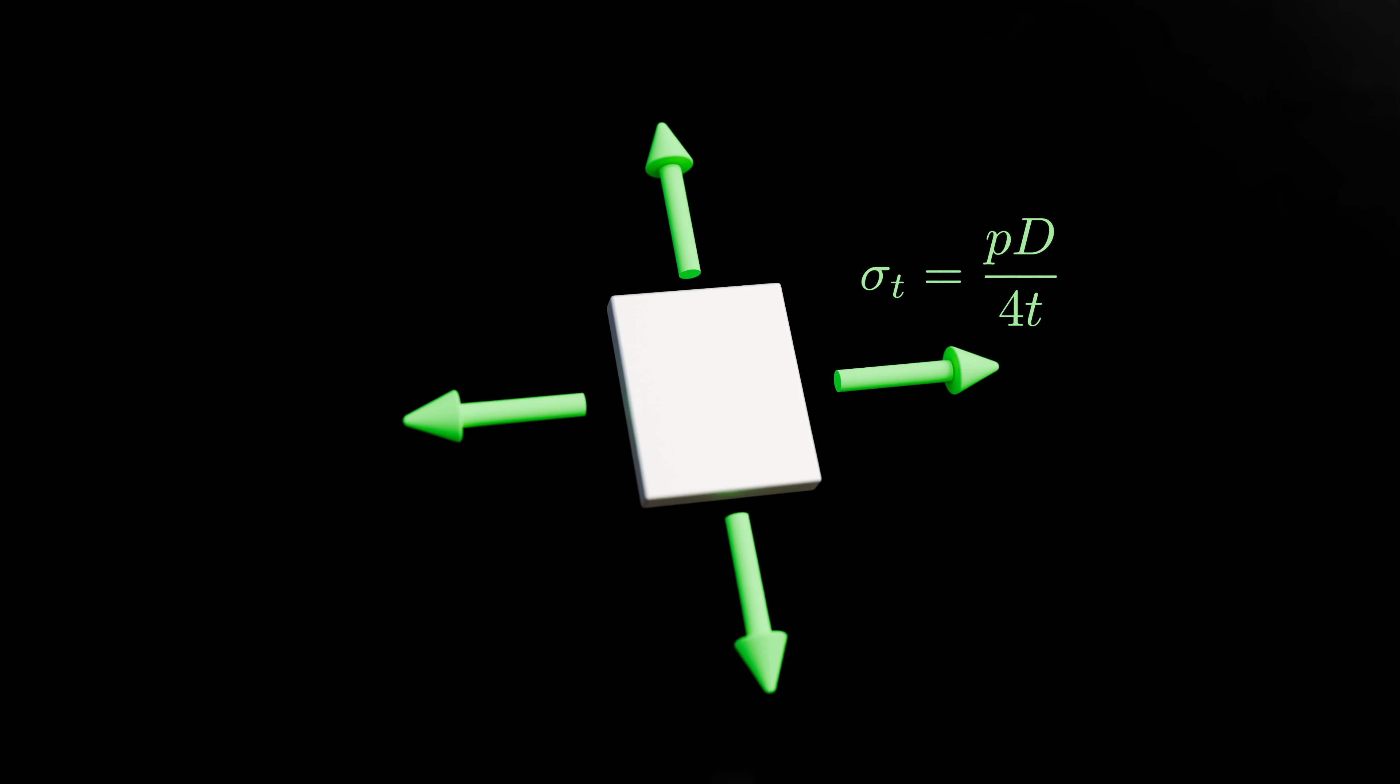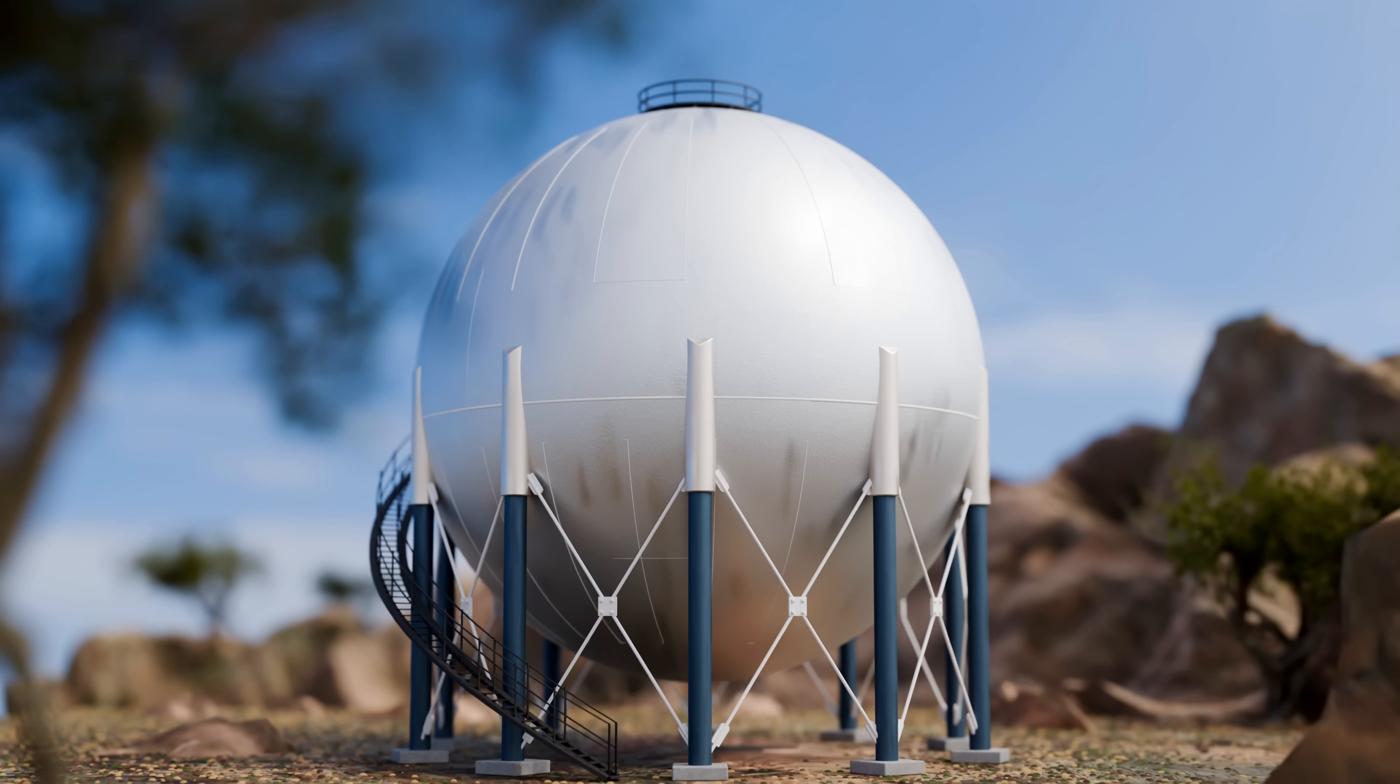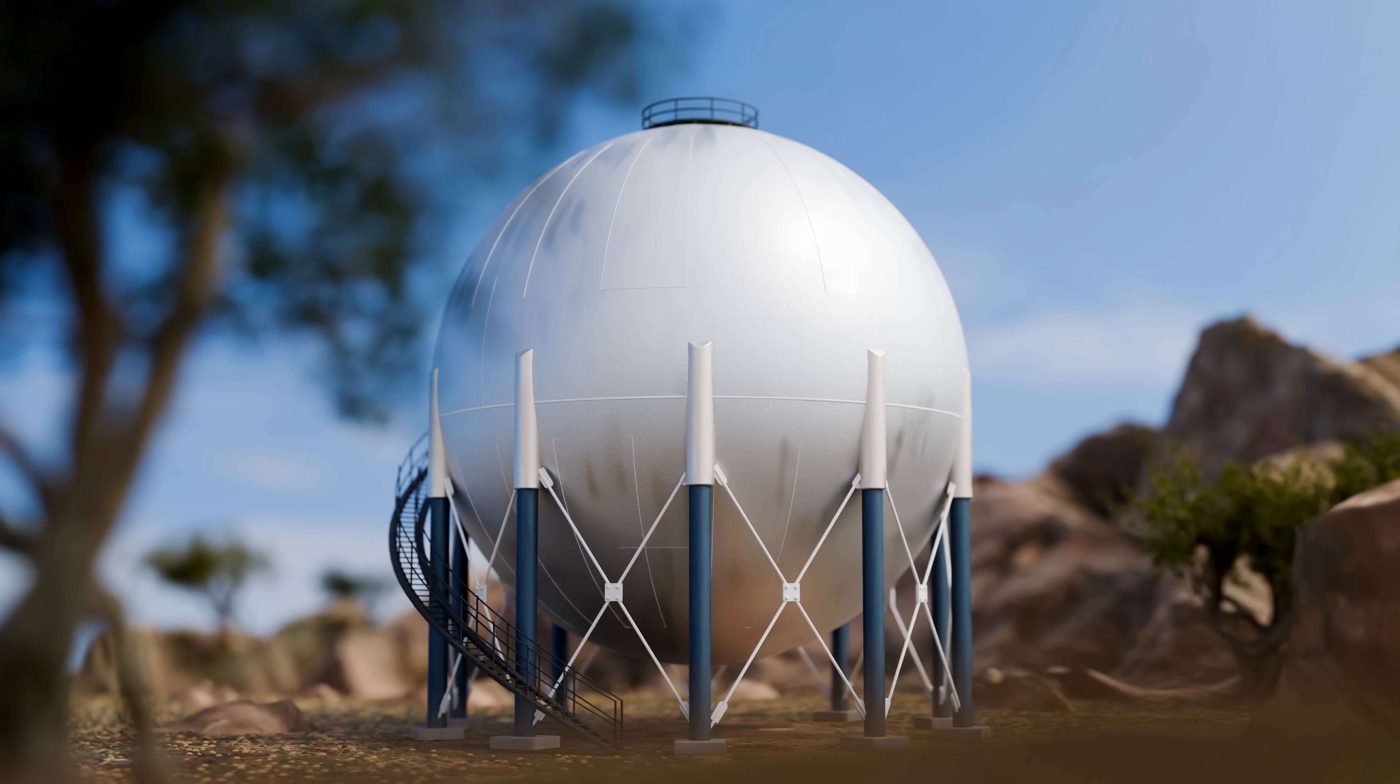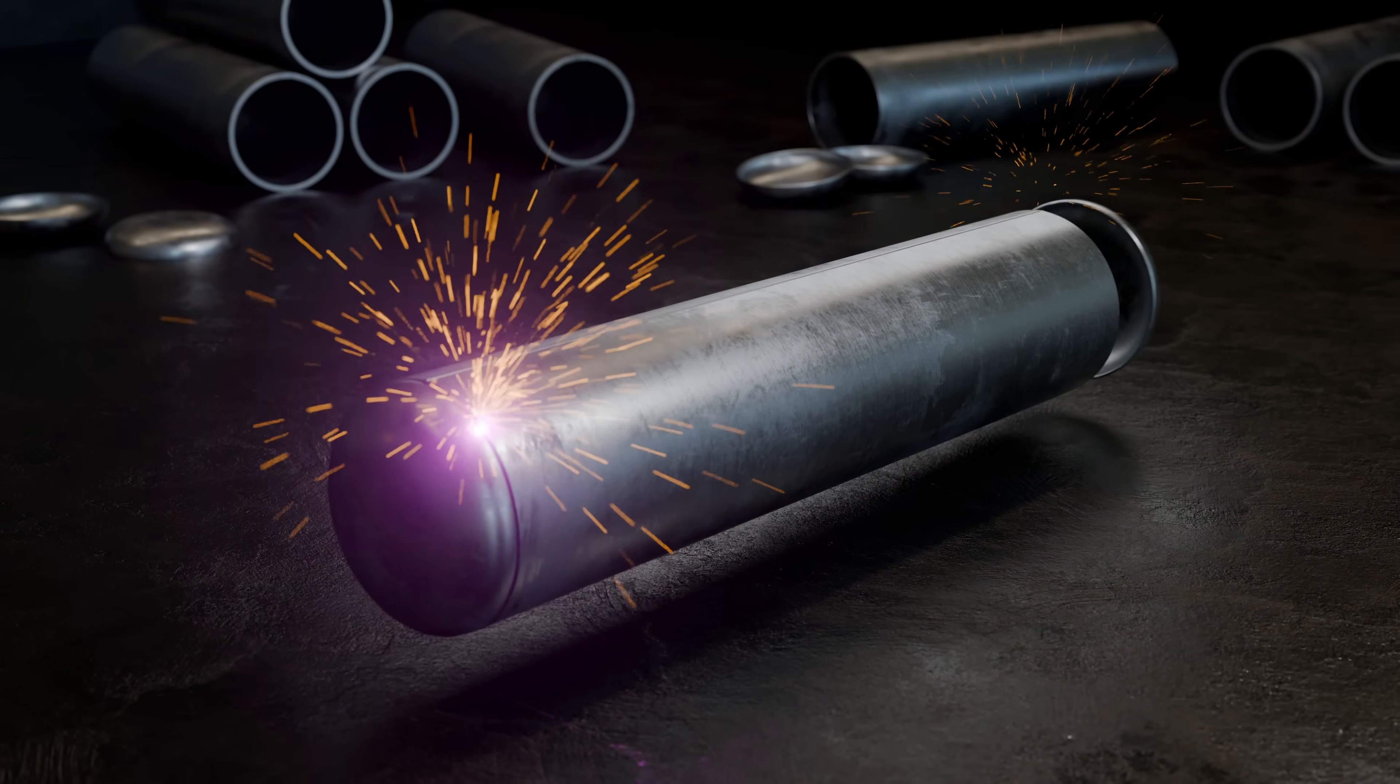In theory, a spherical vessel could be half the thickness of a cylindrical one for the same internal pressure. Despite this, cylindrical vessels are still far more common in industry. The reason is simply because they're a lot less expensive to make. Rolling plate into cylinders and welding on domed end caps is much easier than forming a sphere.